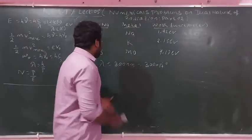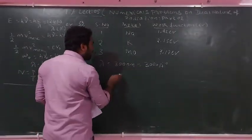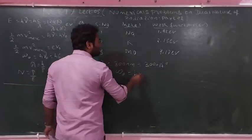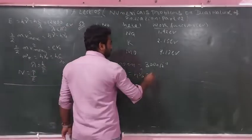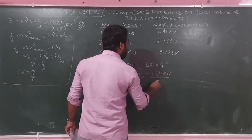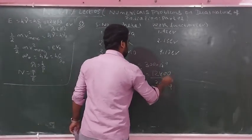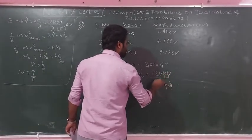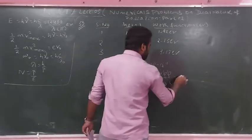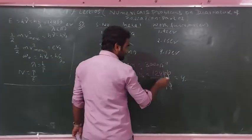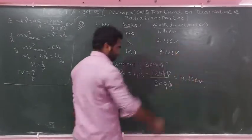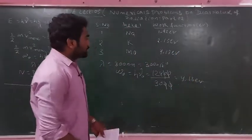Check the incident photon energy for λ = 3000 angstrom using E = 12400/λ = 12400/3000 = 4.13 electron volt. The threshold frequency is the minimum frequency below which photoelectrons are not emitted. The work function is the minimum energy required for electron emission.